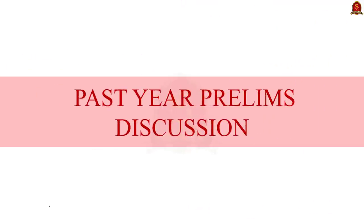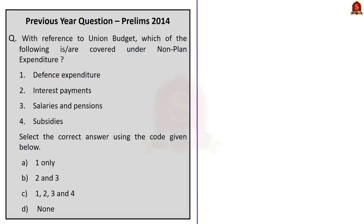Let us start with this 2014 previous year question. With reference to the union budget, which of the following is or are covered under non-planned expenditure? Statement 1: defense expenditure. Statement 2: interest payments. Statement 3: salaries and pensions. Statement 4: subsidies. Option A: one only. Option B: two and three. Option C: one, two, three and four. Option D: none.